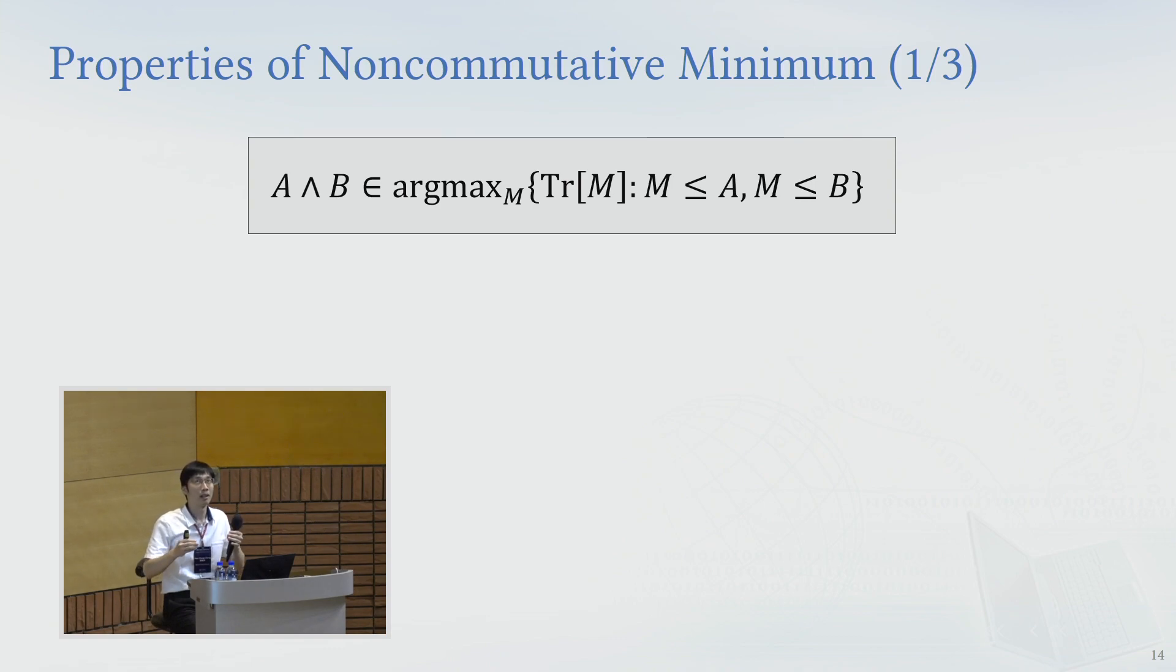So essentially it's like the greatest lower bound to A and B, so that's kind of a minimum, but it's used for operators. That's why I call it a non-commutative minimum.